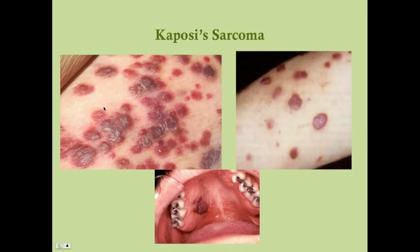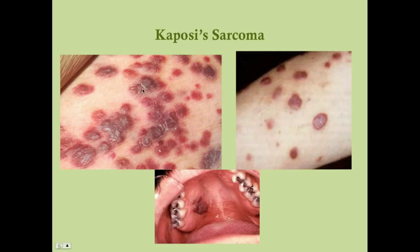These are what the Kaposi sarcoma lesions look like. If you see these on an HIV/AIDS patient, immediately suspect Kaposi sarcoma and get a biopsy. The histology will confirm the diagnosis.